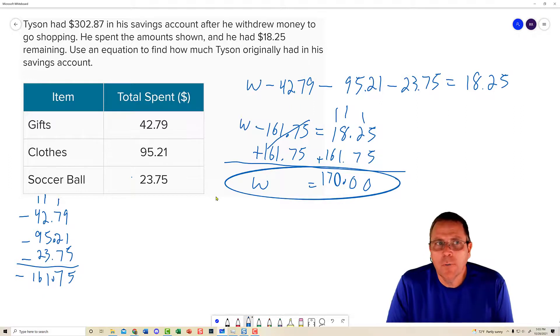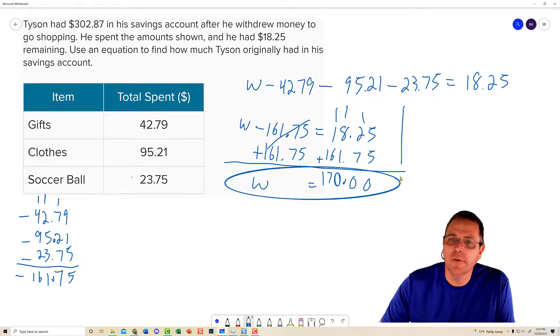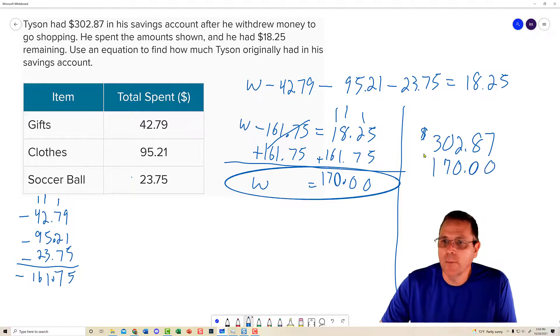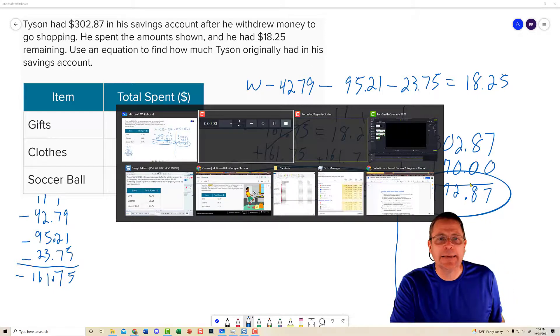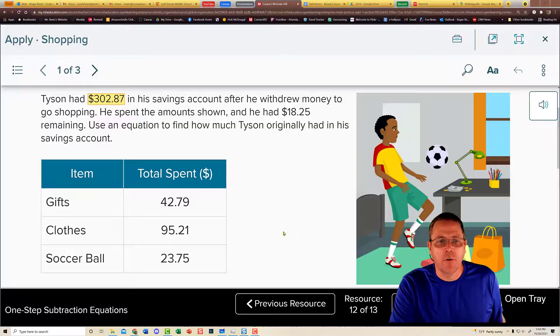But that is not what it wanted to find out. It wanted to find out how much money did he have in his savings account. Before he went shopping. So to find that out, I'm going to take the $302 and the $0.87. I'm going to add to that the $170 that he withdrew. And now we're going to take and see we have a 7, an 8, a decimal, a 2, a 7, and a 4.